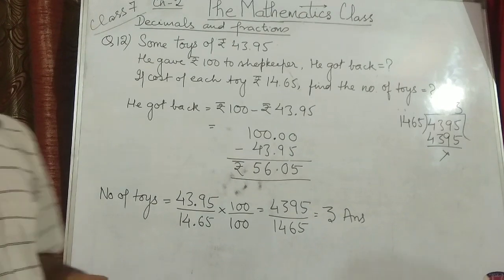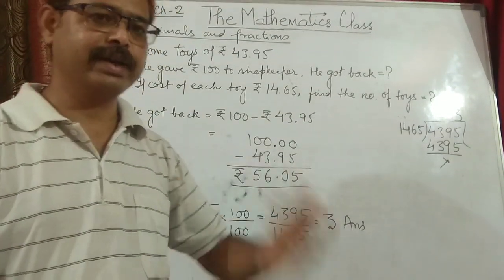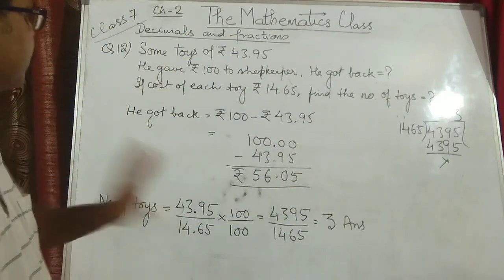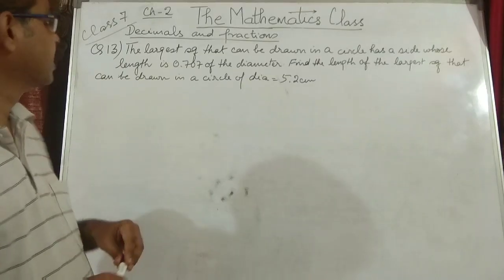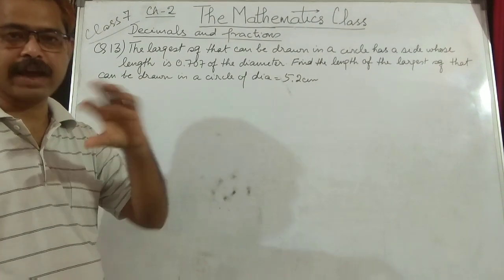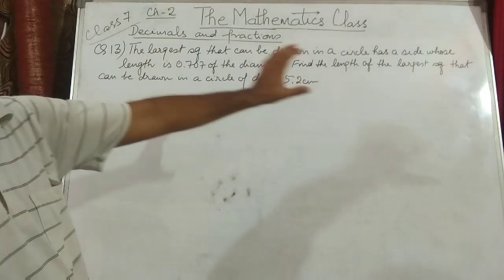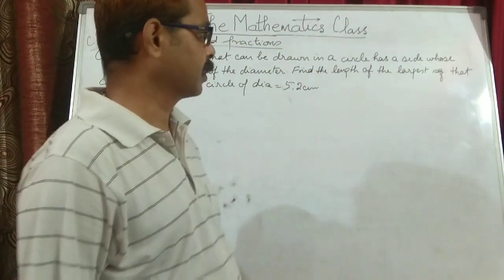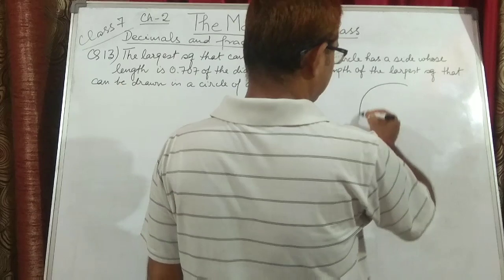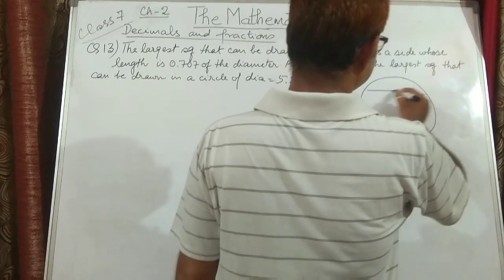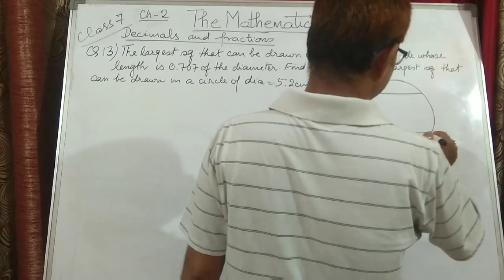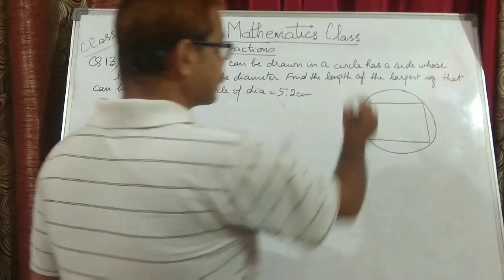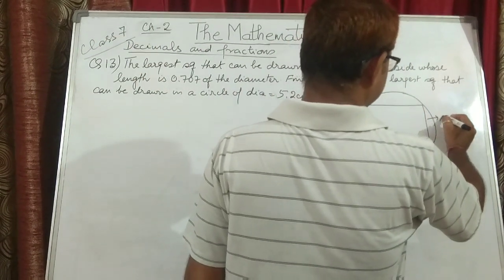I hope this is understood. Please go through the video once or twice again if you have any doubt so that your concept will be clear. Now question number 13 — its language is a little complicated. They say: the largest square that can be drawn in a circle has a side. This is the side.